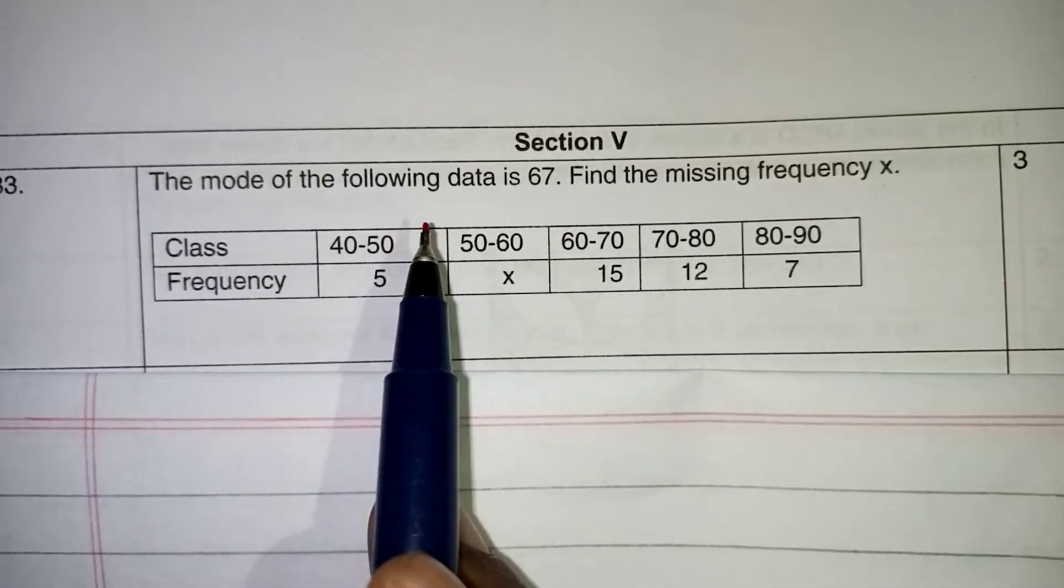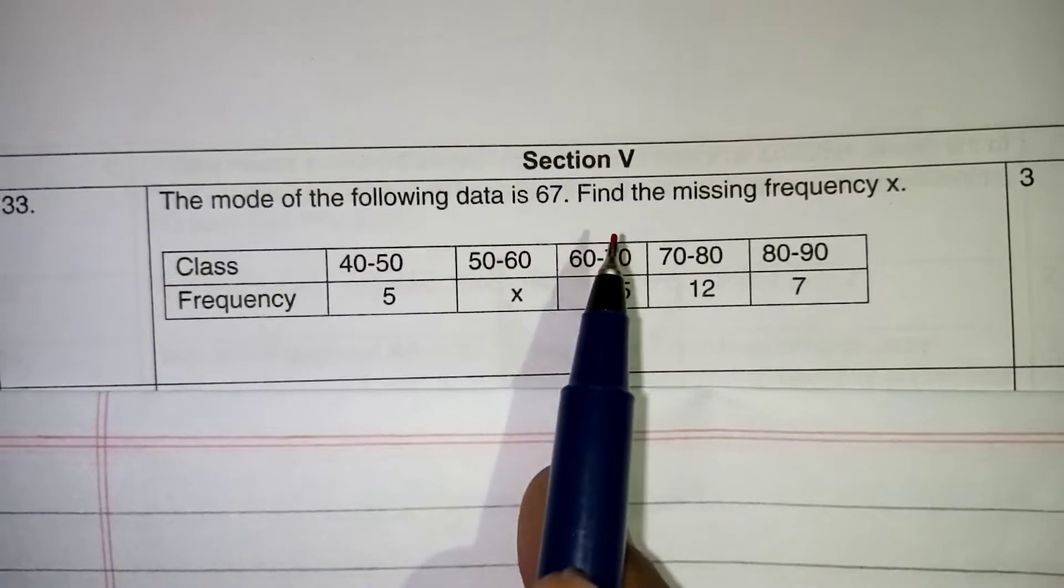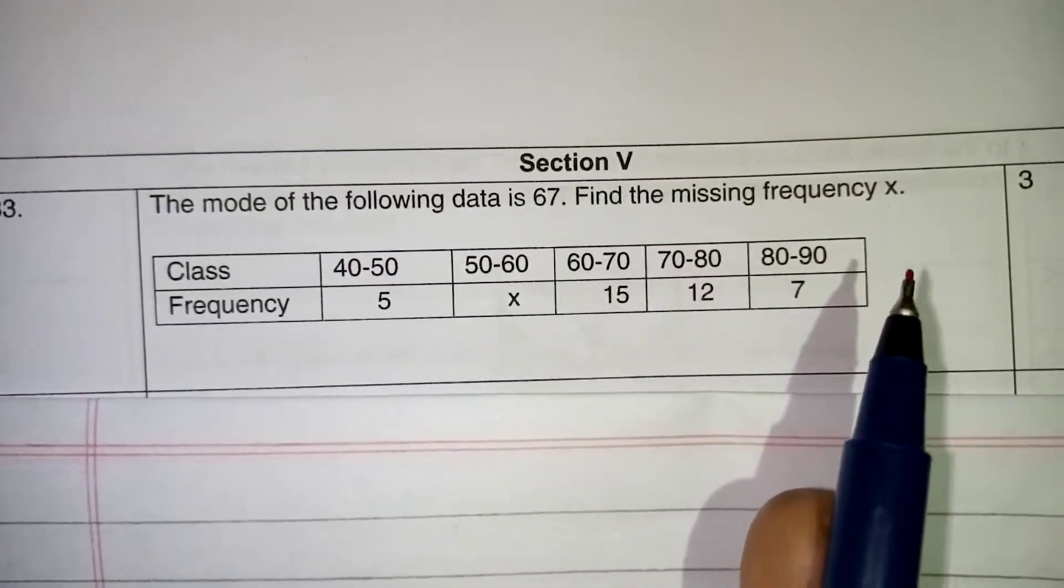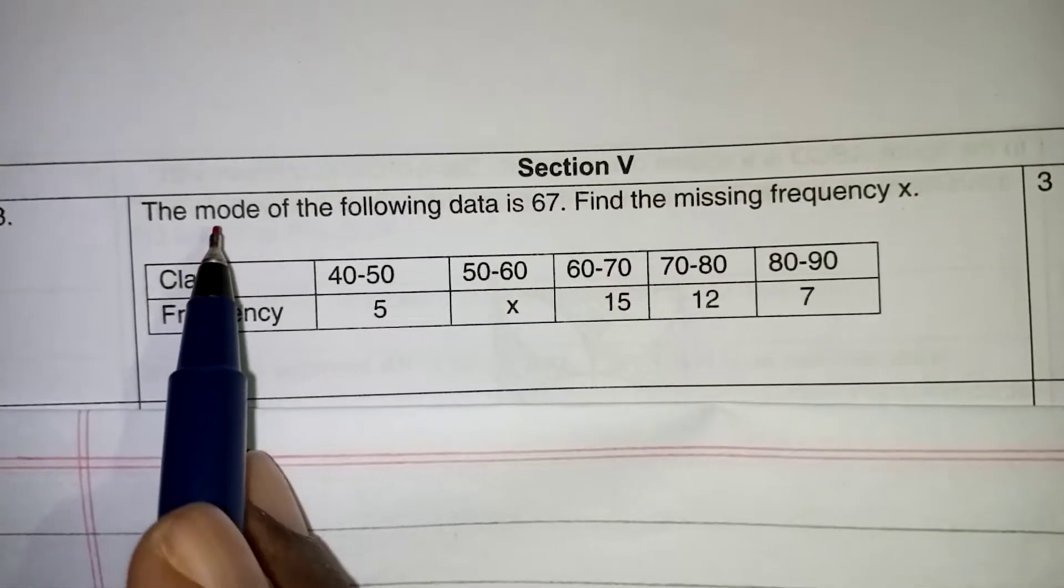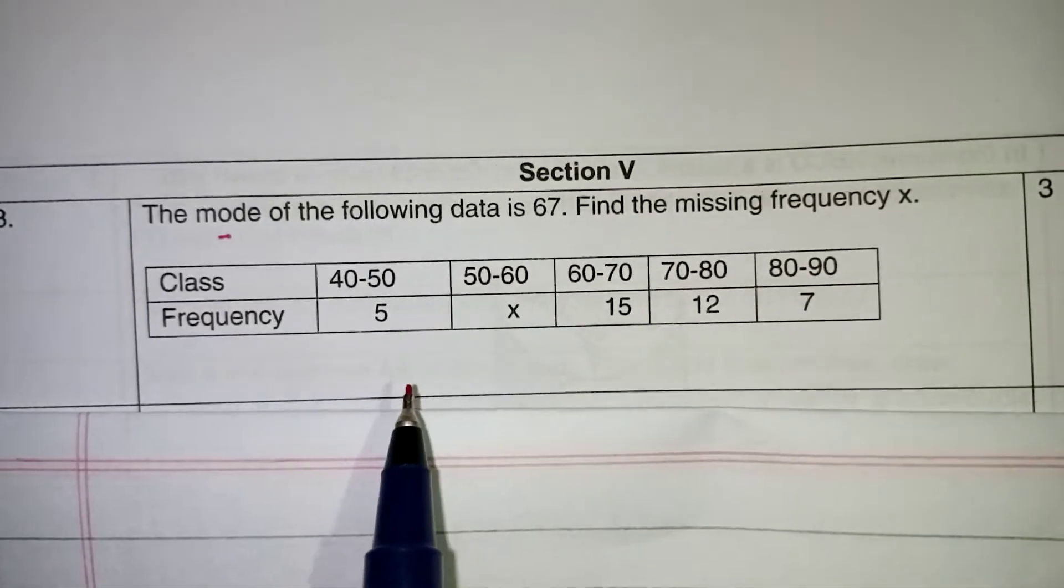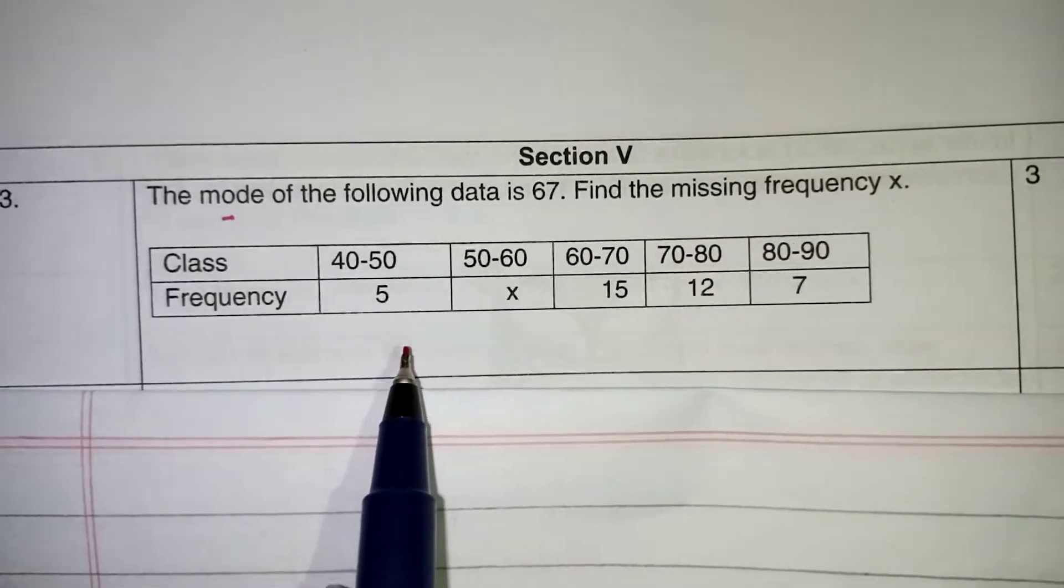the mode of the following data is 67, find the missing frequency x. So we need to find the x value, they have given us the mode value as 67. So let's find the mode value for the given table.